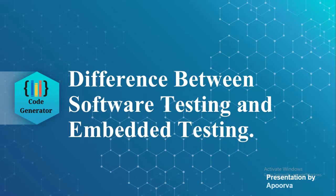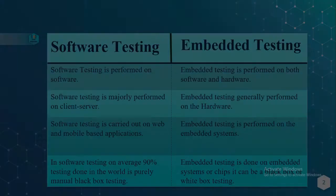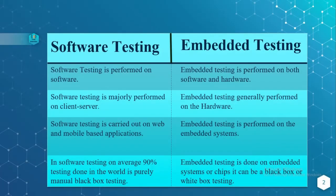Now let's go to the differences. Software testing is performed on software components, whereas embedded testing is performed on both software and hardware components. Software testing is majorly performed on client-server architecture, which you are all aware of.